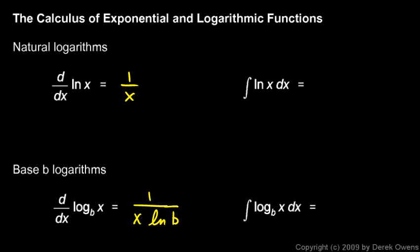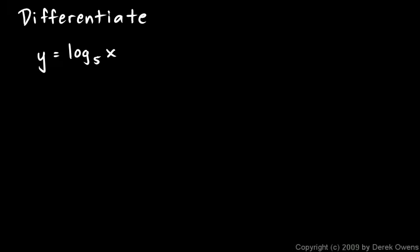Now let's do a few examples with this concept. We're told to differentiate y equals log base 5 of x. We just apply the formula: this is going to be 1 over x times the natural log of 5. And that's it — pretty simple.